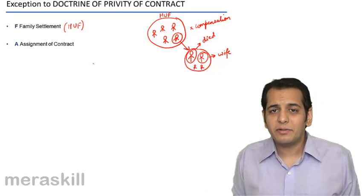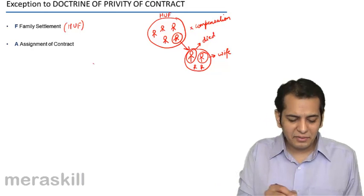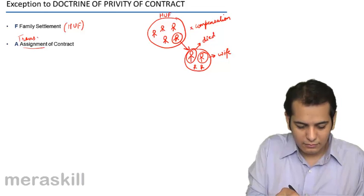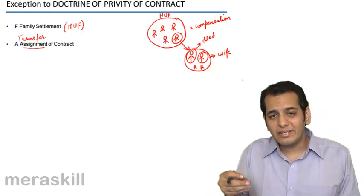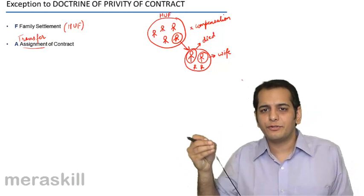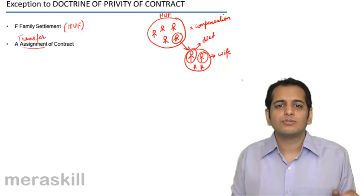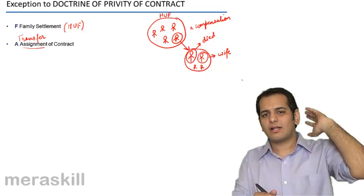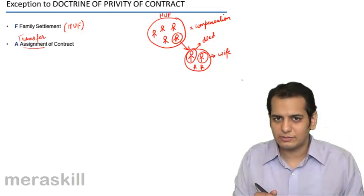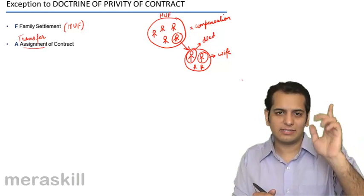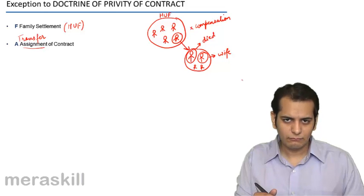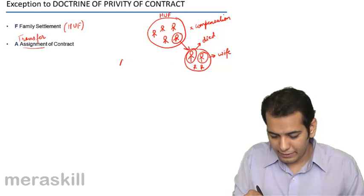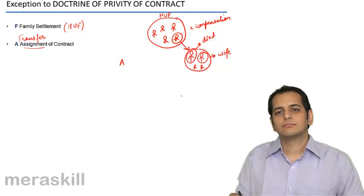The next topic is assignment of a contract. Assignment means transferring — you assign your asset, you assign your right, you assign your claim to somebody else. So assignment means transferring. However, you can only assign your rights, you can only assign your claims. You cannot assign your liabilities.